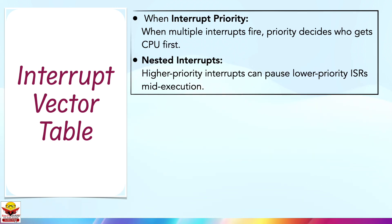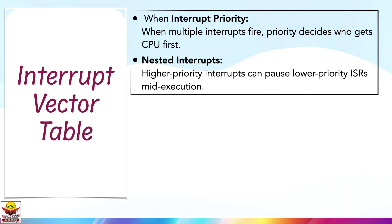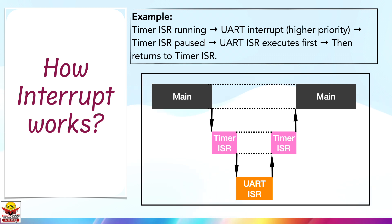Let's understand interrupt priority and nested interrupts. When multiple interrupts occur, the CPU doesn't handle them randomly — it uses interrupt priority, where each interrupt is assigned a rank, and higher priority interrupts get the CPU's attention first. Even if an interrupt is already being served, a higher priority one can jump in; this is called a nested interrupt. For example, if your system is handling a timer interrupt but a critical UART message arrives, and UART has higher priority, the MCU temporarily pauses the timer ISR, handles UART, and then returns to the timer task. This smart juggling is what makes embedded systems highly responsive.